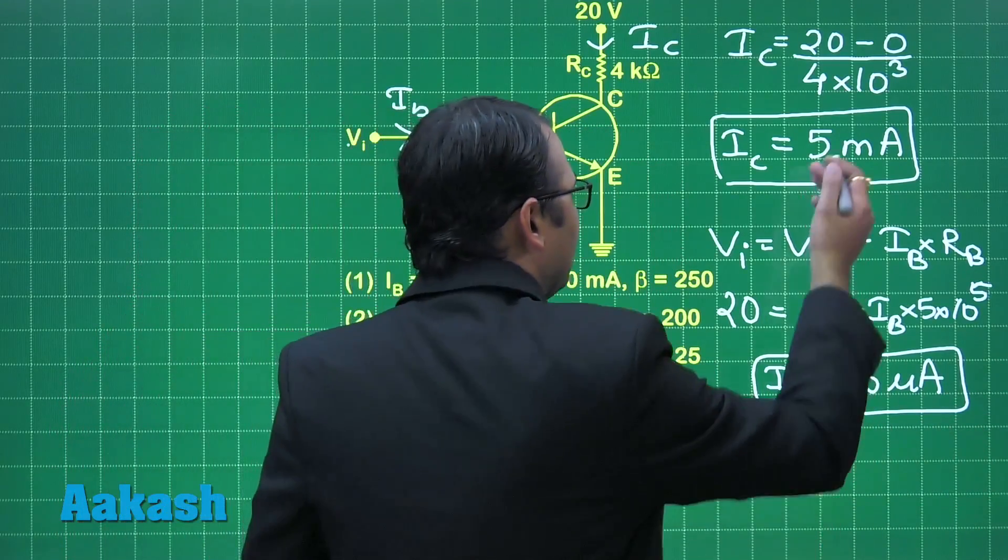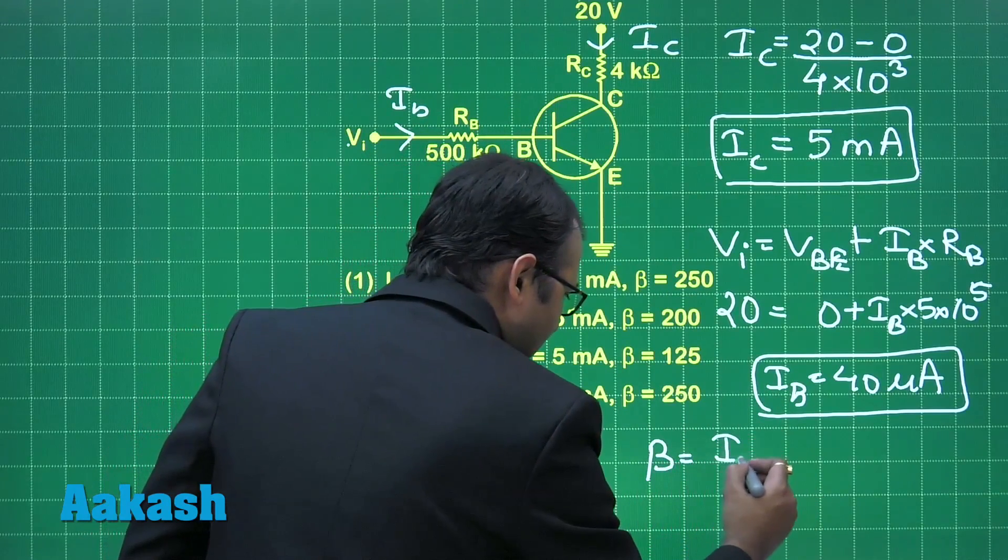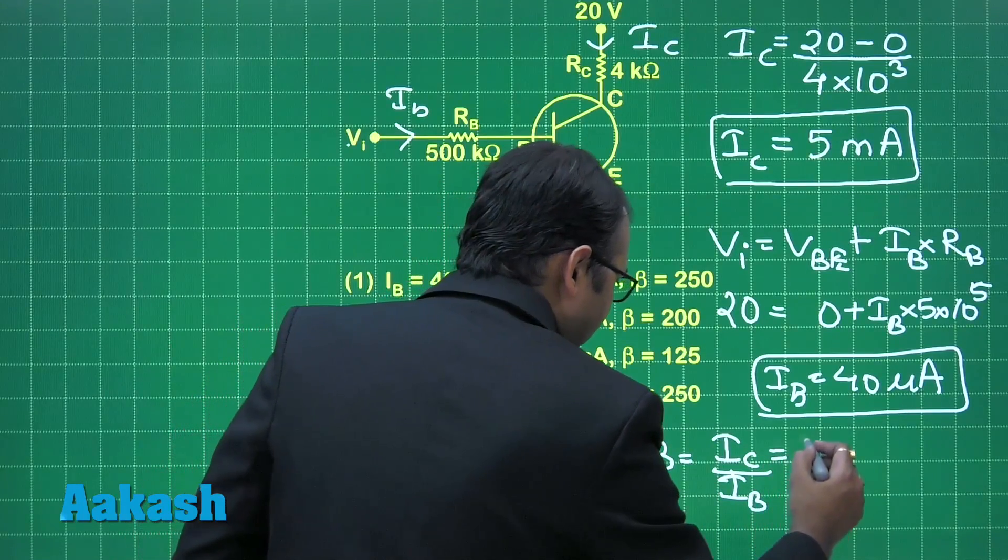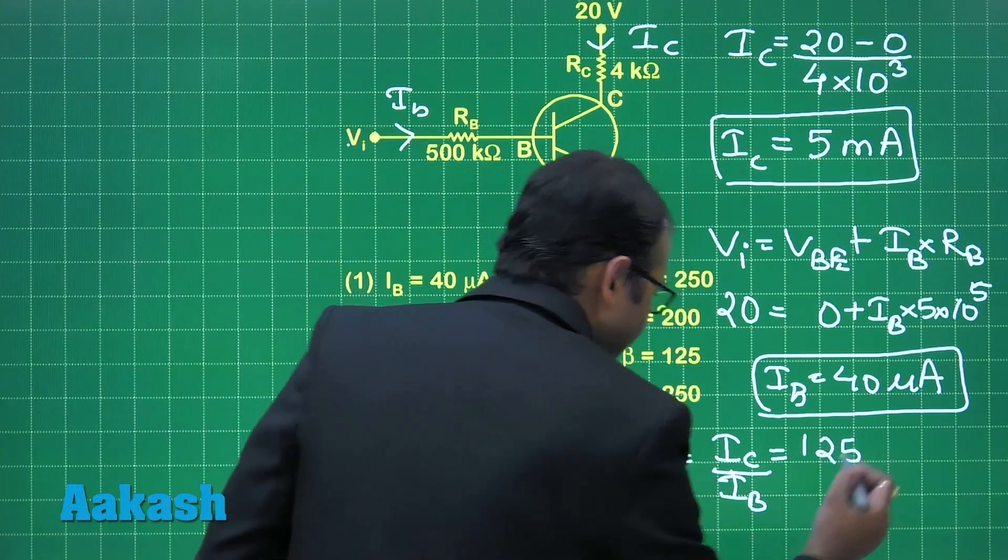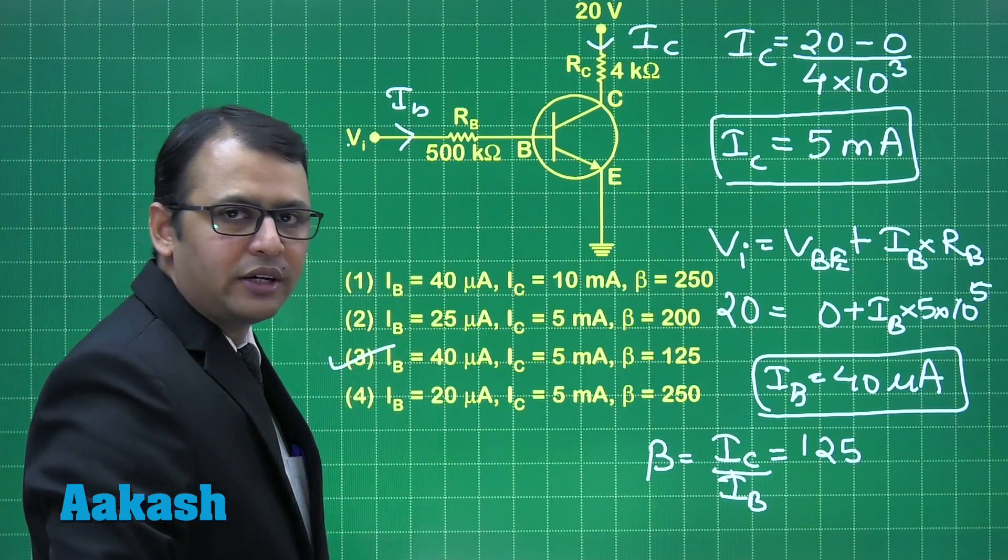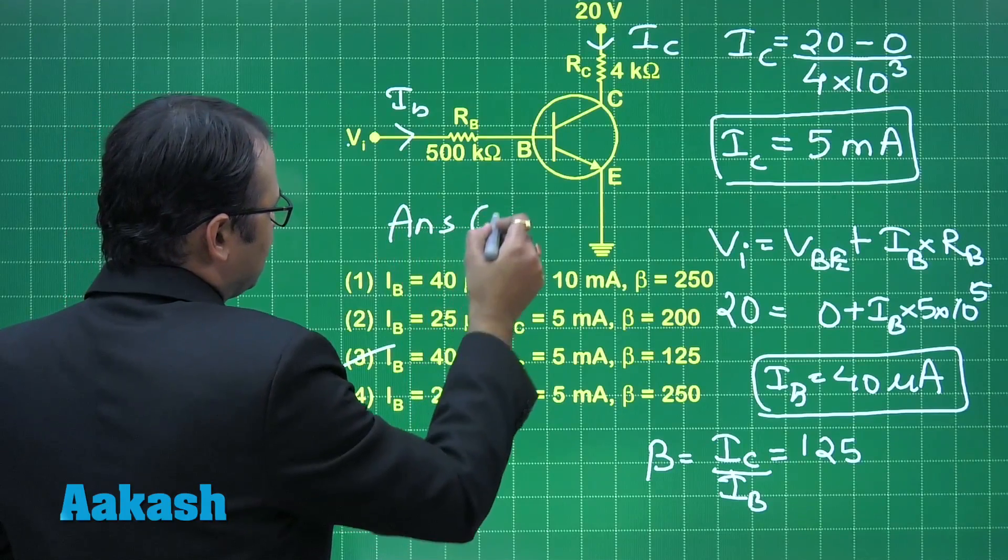So if IB has come and IC has come, then what is left for you is beta. IC by IB, whose value comes to 125. In this way, what option do you get? Third option. So the third option is the correct answer to this question.